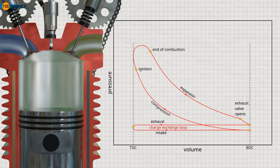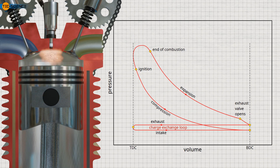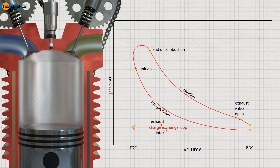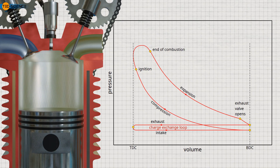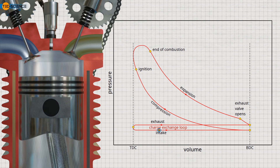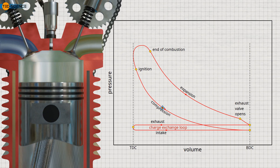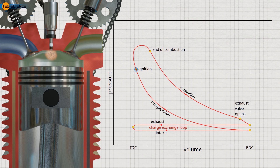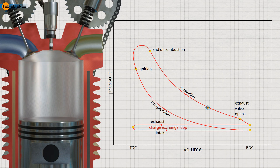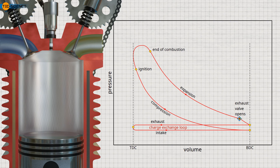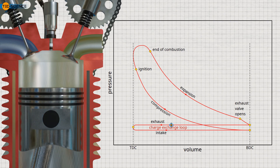In the pressure-volume diagram, the thermodynamic processes in the cylinder of a diesel engine are qualitatively similar to those in a gasoline engine. First, in naturally aspirated engines, the intake process takes place through the suction effect at low negative pressure. This is followed by compression with the valves closed, causing the pressure to rise significantly. Just before reaching top dead center, the injector begins to inject the diesel fuel, which spontaneously ignites due to the high temperature. The powerful explosion causes the piston to move downward, transferring work to the crankshaft via the connecting rod. Just before bottom dead center is reached, the exhaust valve opens and the burnt gases are expelled from the cylinder at a slight overpressure.